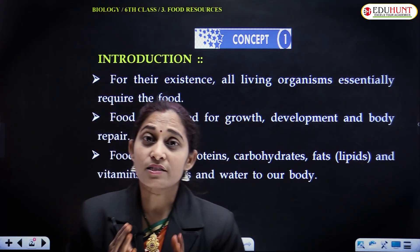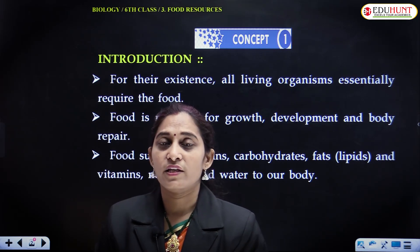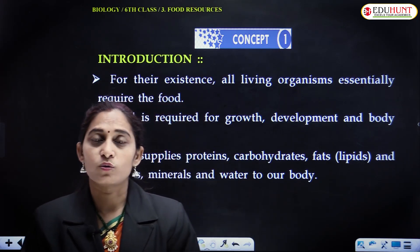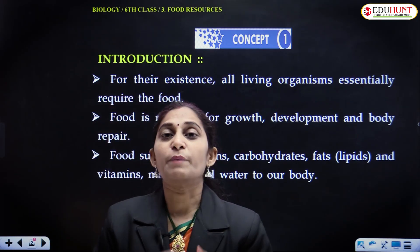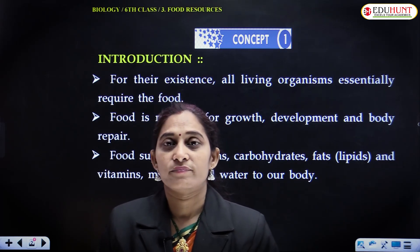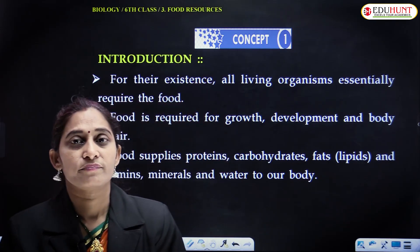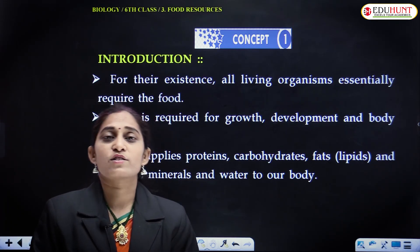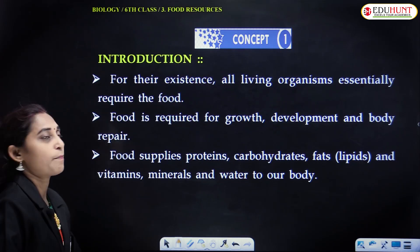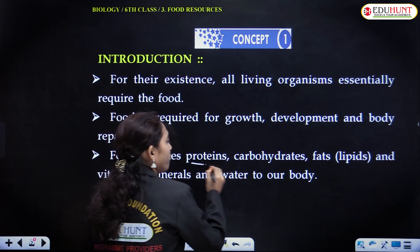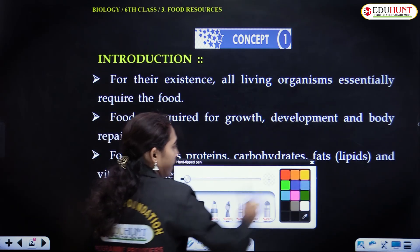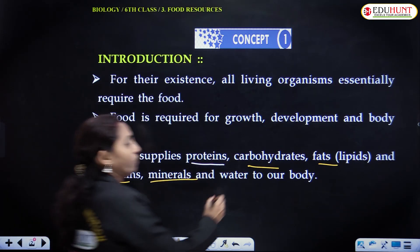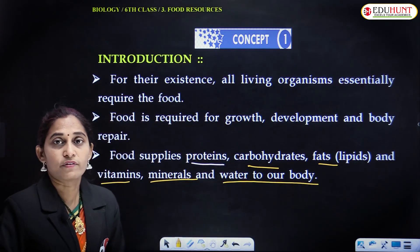Even plants also require food. They require nutrients for their maintenance, for their metabolic activities, for their growth, development, and repair system. Every organism for its survival requires food. Food supplies nutrients in the form of proteins, carbohydrates, fats — that is lipids — and vitamins, minerals, and even water is also required by our body.